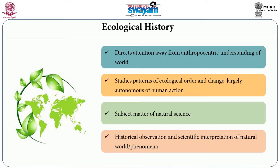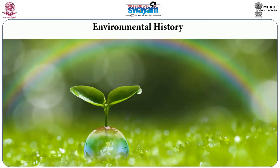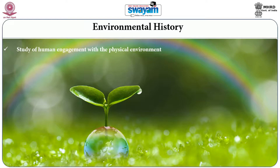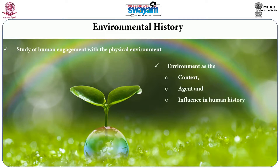According to Ramachandra Guha and David Arnold, ecological history becomes a narrow branch of knowledge which focuses only on changes in ecology from a historical perspective. Whereas environmental history becomes a broader knowledge base — it studies human action and human engagement in the physical world. Environmental history studies the relationship between environment and human society, where environment becomes a context, an agent, and an influence in human society.